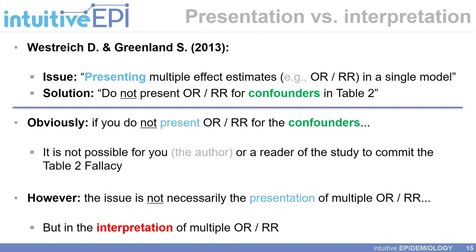I want to make one quick clarification when reading the Table 2 fallacy paper. The authors frame the issue as presenting multiple effect estimates, such as adjusted odds ratios or risk ratios, in a single model, and they say the solution is to not do this — do not present multiple adjusted ORs or RRs for confounders in your Table 2, and essentially list them by name in a footnote without giving the measures of effect for the confounders. I do not disagree with this: obviously, if you do not present the adjusted odds ratios for the confounders, it is not possible to commit the Table 2 fallacy.